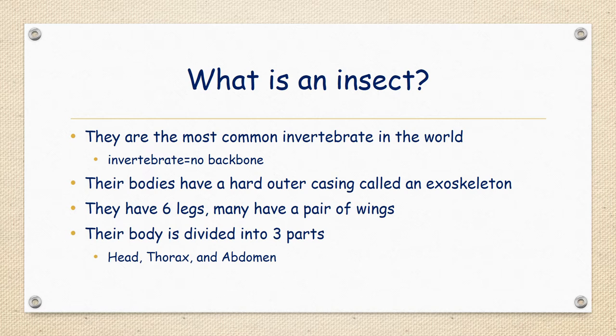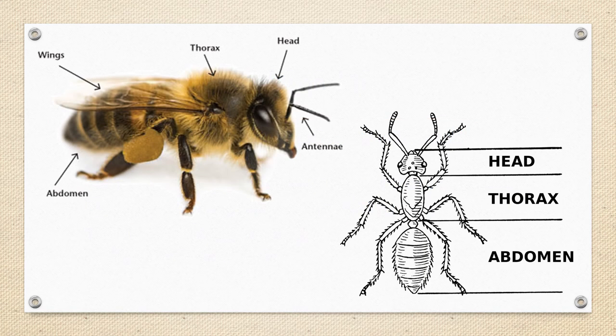Their body is divided into three parts: the head, the thorax, and the abdomen. Looking at our diagram here, we can see how those are broken down. The head is where the antennae, the eyes, and the mouth are. The thorax is the middle section which has the legs and wings if they have them, and then the abdomen is on the bottom.